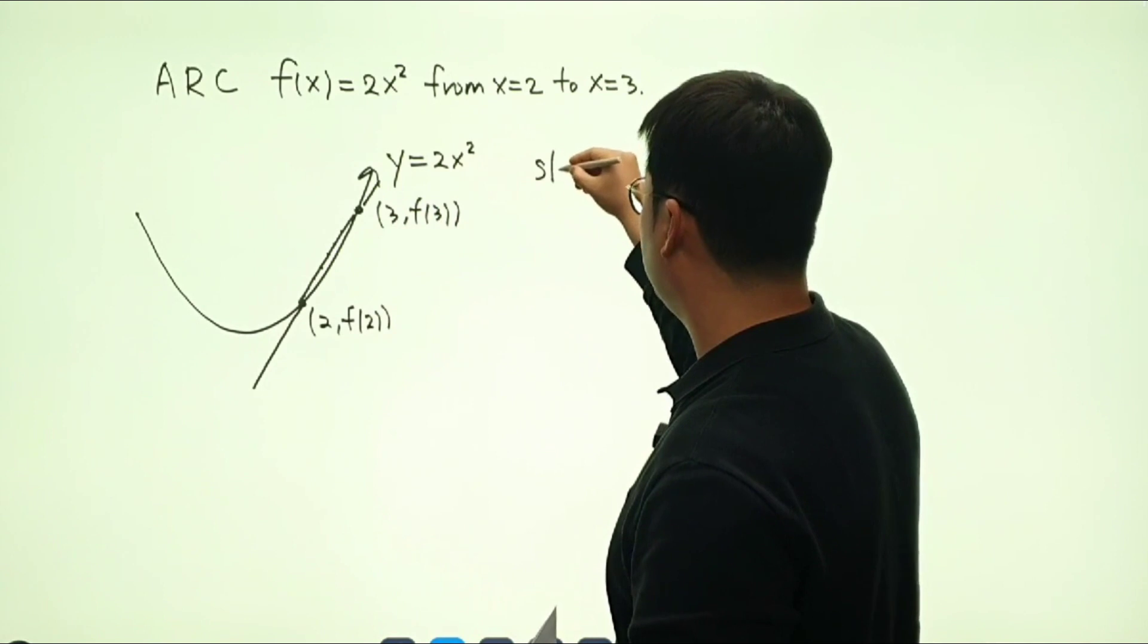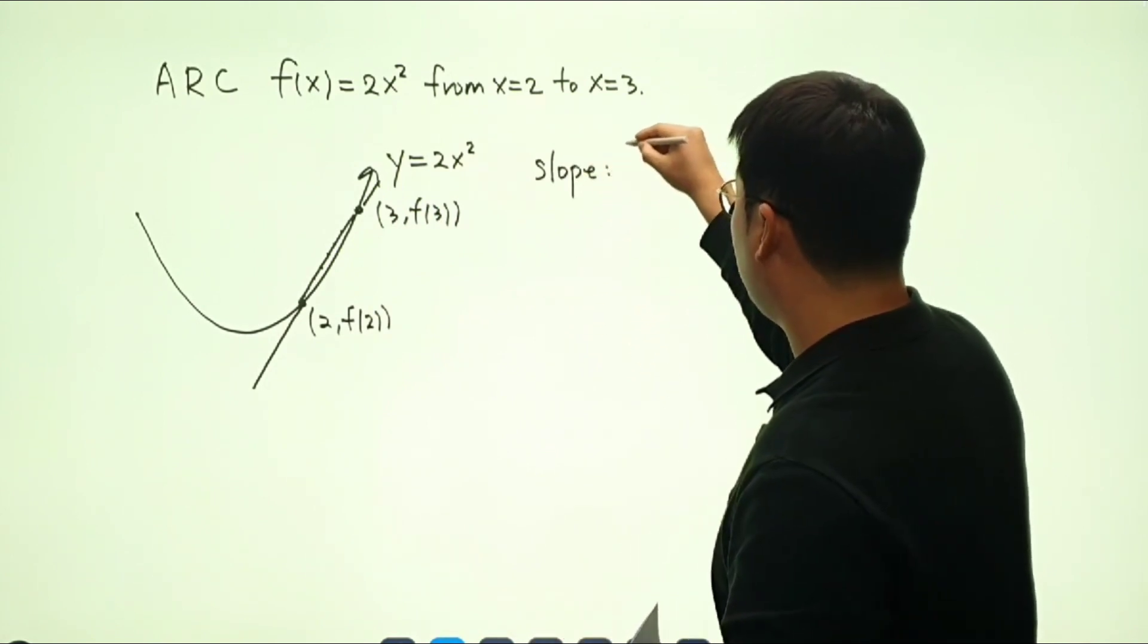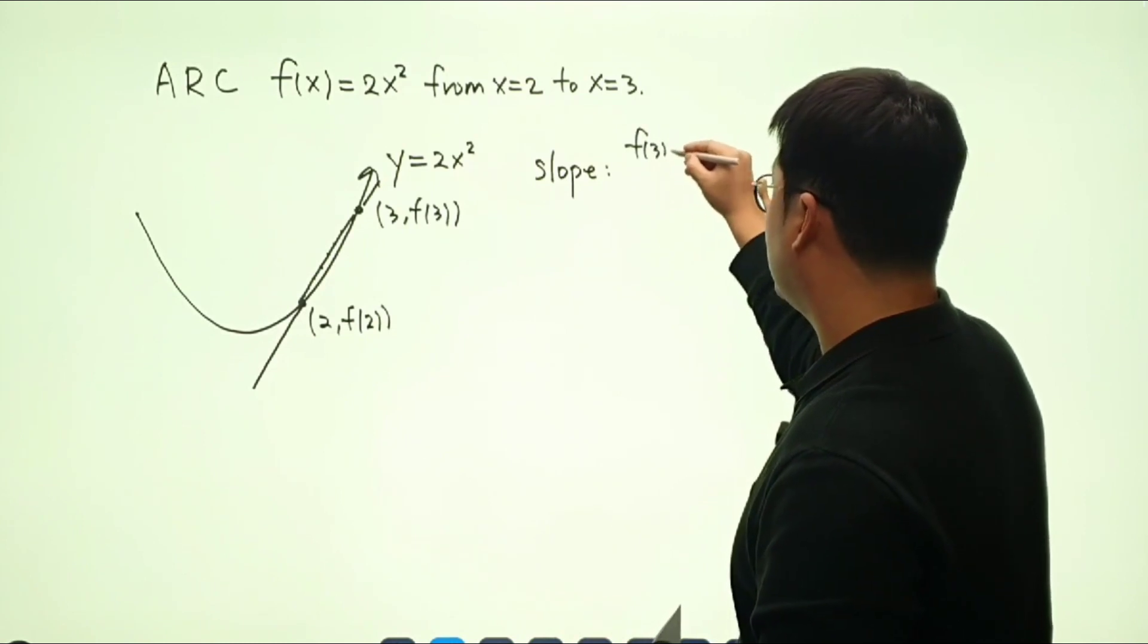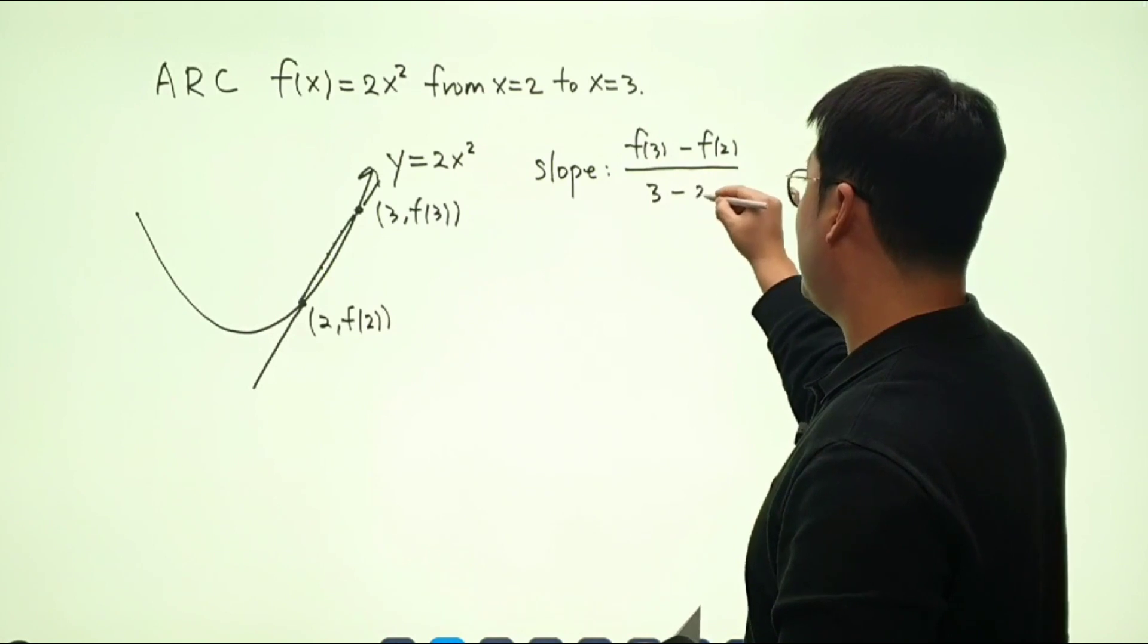So I'm just going to write slope. And that will be f of 3 minus f of 2 divided by 3 minus 2.